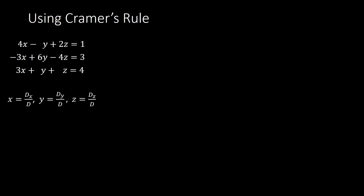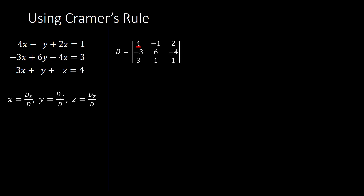Let's explain how this works with three equations. Using Cramer's Rule, we would have x equals D-sub-x over D, y equals D-sub-y over D, and z equals D-sub-z over D. We begin by finding the denominator D. Looking at all the coefficients of the variables, we have the matrix with entries 4, negative 1, 2; negative 3, 6, negative 4; and 3, 1, 1. Finding the determinant of this matrix by expanding along the first row gives a determinant equal to 7.